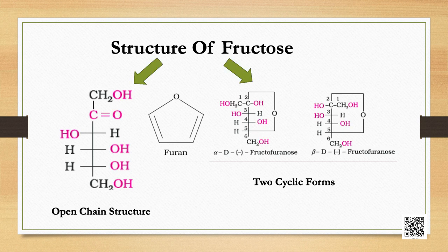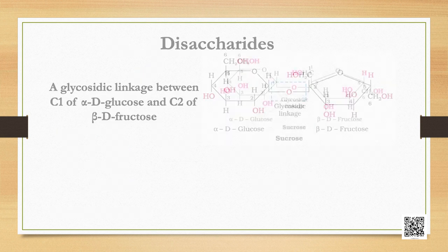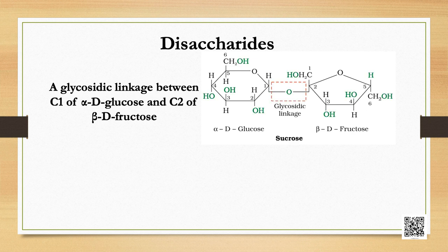Fructose also exists in two cyclic forms; the ring thus formed is a five-membered ring and is named as furanose, with analogy to the compound furan. Disaccharides on hydrolysis yield two molecules of either the same or different monosaccharides. The two monosaccharides are joined together by an oxide linkage formed by the loss of a water molecule; such a linkage between two monosaccharide units through an oxygen atom is called a glycosidic linkage.